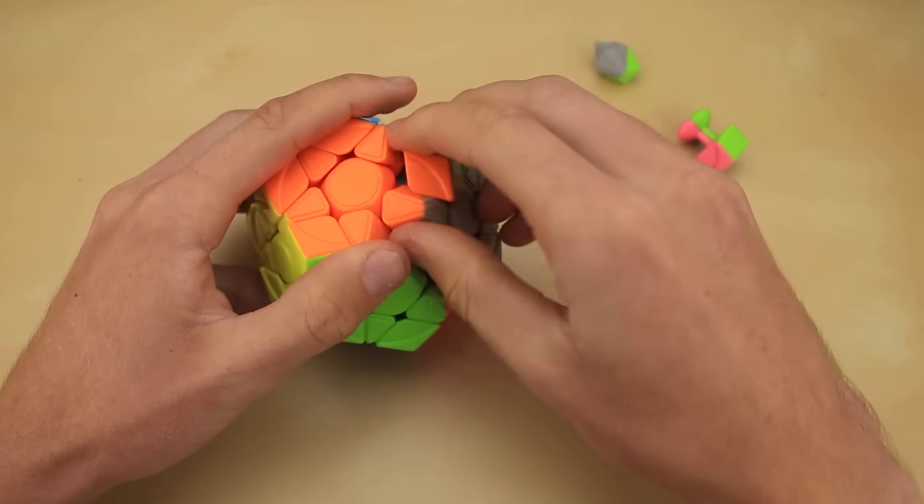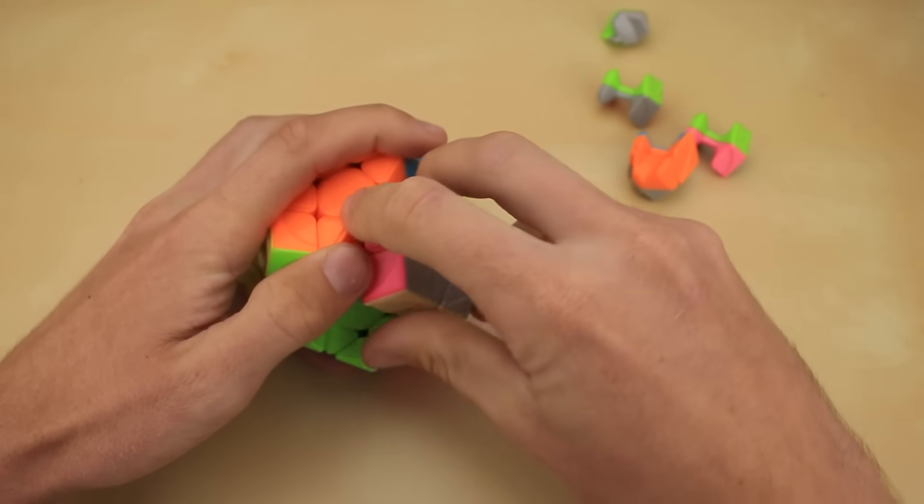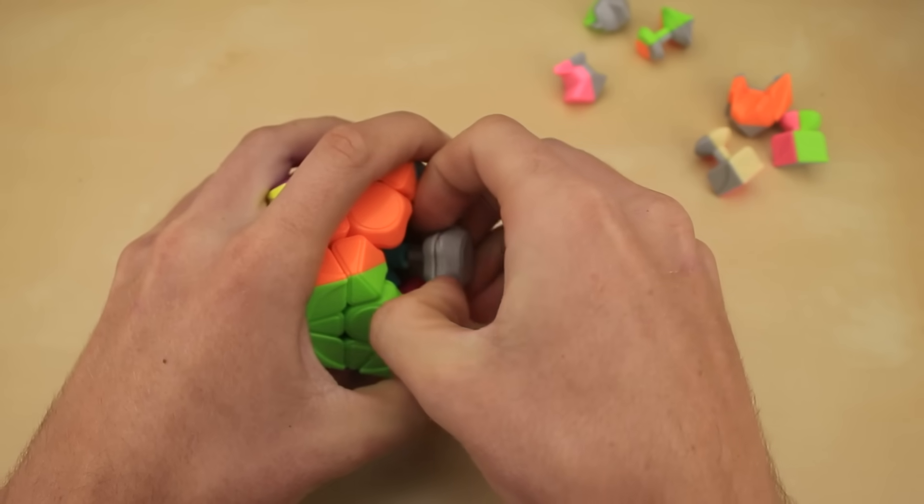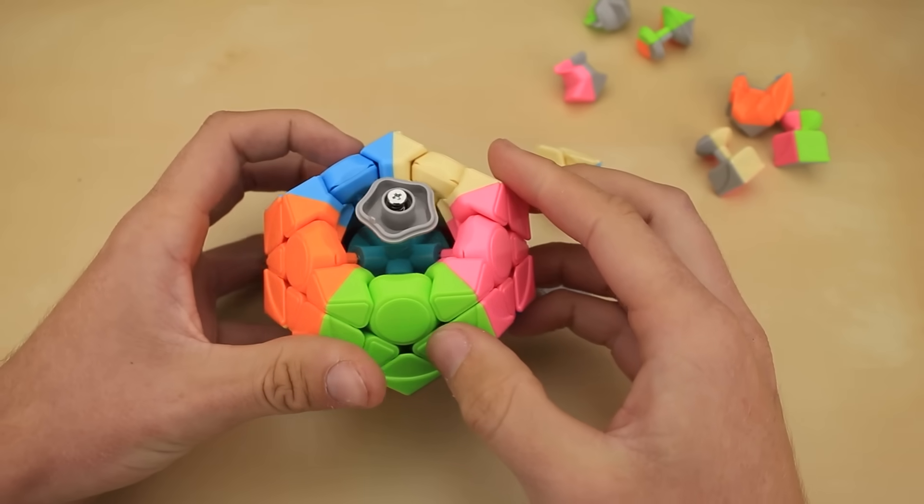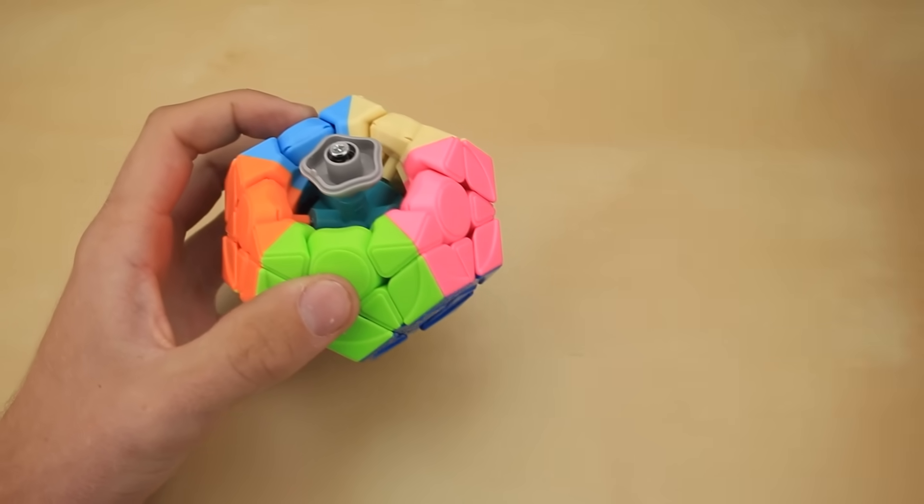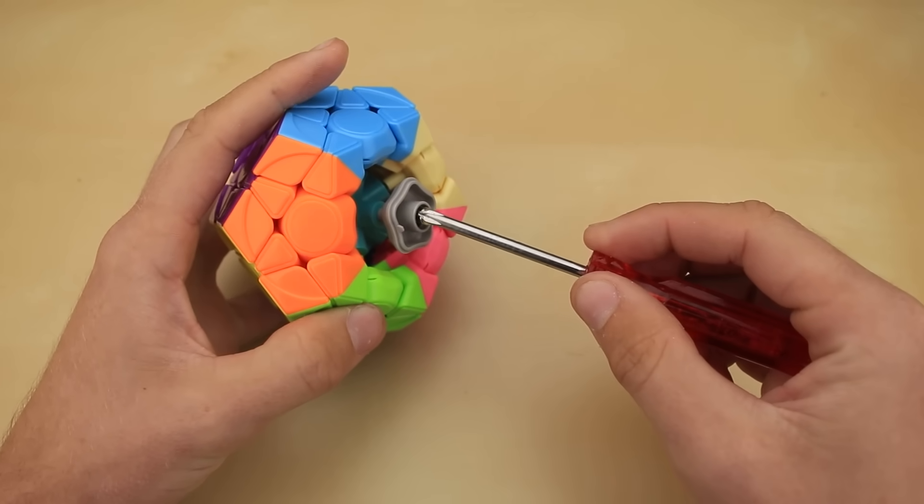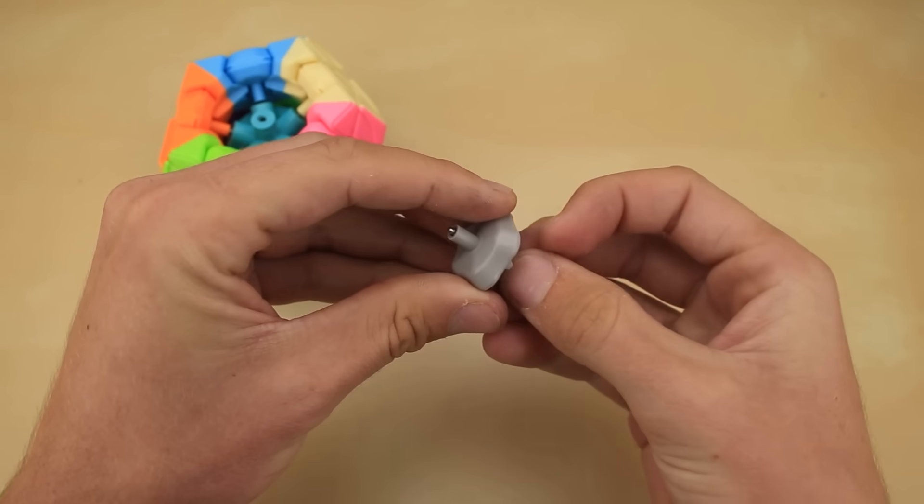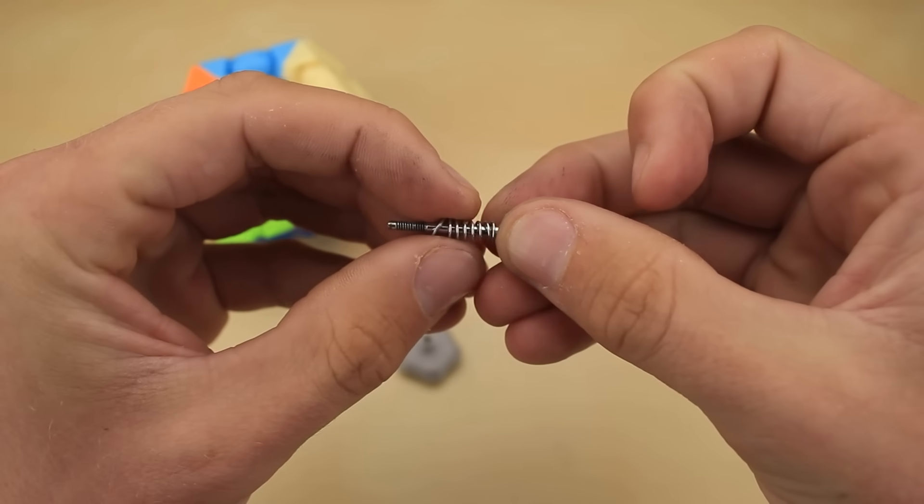Depending on how these centerpieces are designed, it could make our lives very easy or very difficult. So once we get all these pieces off, we can go ahead and pop off the center cap just like this, and there is our screw and spring. So let's grab our screwdriver and see just how well, or realistically, just how poorly, these magnets will fit. Okay, so here we have the actual centerpiece, as well as screw, spring, and washer.